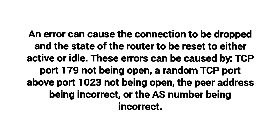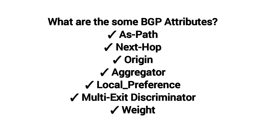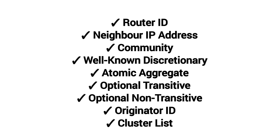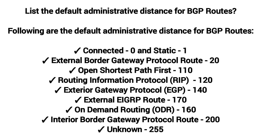What are some BGP attributes? BGP attributes include: AS Path, Next Hop, Origin, Aggregator, Local Preference, Multi-Exit Discriminator (MED), Weight, Router ID, Neighbor IP Address, Community, Well-Known Discretionary, Atomic Aggregate, Optional Transitive, Optional Non-Transitive, Originator ID, and Cluster List.